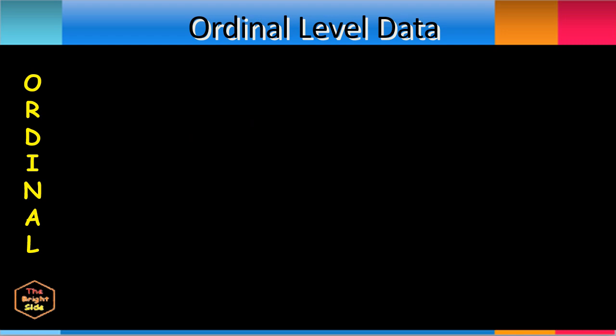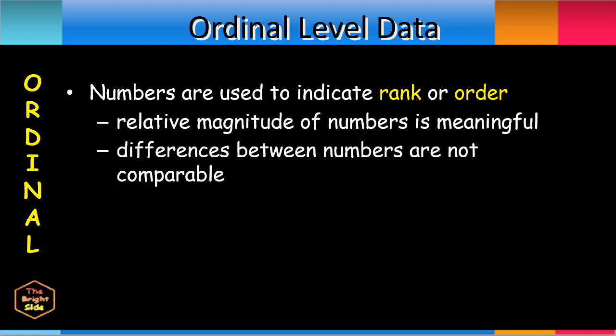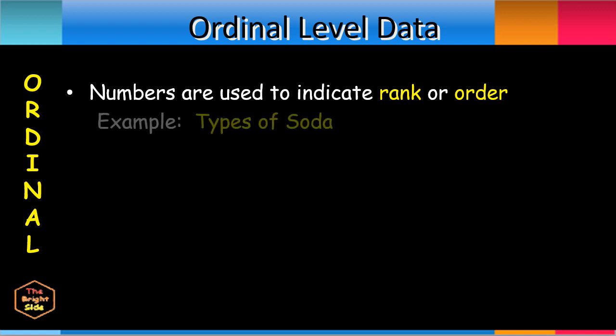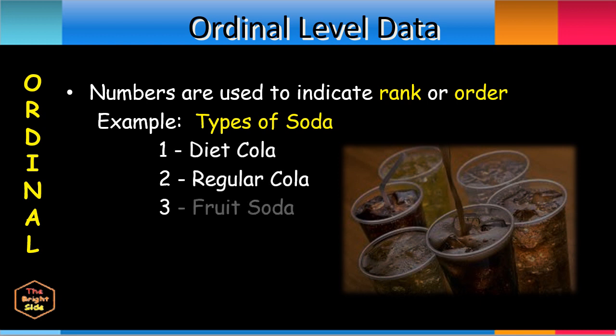Ordinal level data numbers are used to indicate rank or order. This qualitative data incorporates an ordered position or ranking of elements of a population. The relative magnitude of numbers is meaningful, but the differences between numbers are not comparable. An example is the data for the variable types of soda. The numbers 1, 2, and 3 may be assigned to the values such as diet cola, regular cola, and fruit soda, respectively.